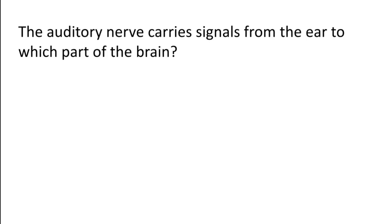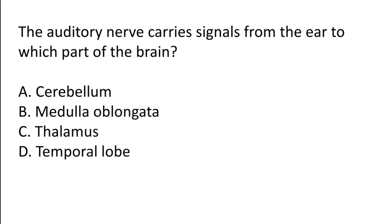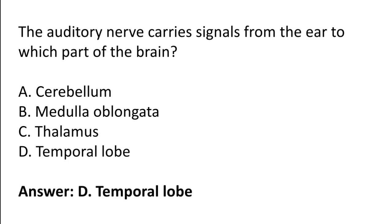The auditory nerve carries signals from the ear to which part of the brain? Options: Cerebellum, Medulla oblongata, Thalamus, Temporal lobe. The correct answer is option B — the auditory nerve carries signals from the ear to the Temporal lobe of the brain.